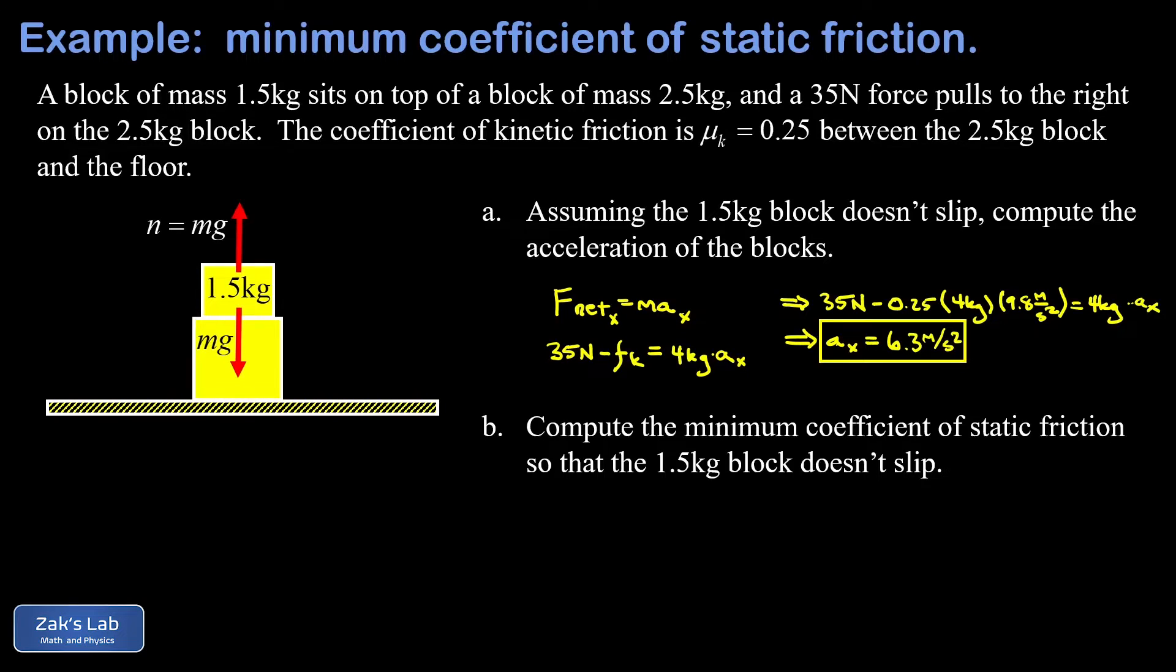Then we have to ask what's going on with the static friction force here. The block is accelerating to the right and it has a magnitude of 6.3 meters per second squared, and the only force that could be pushing it to the right is the friction force from the 2.5 kilogram block underneath it.